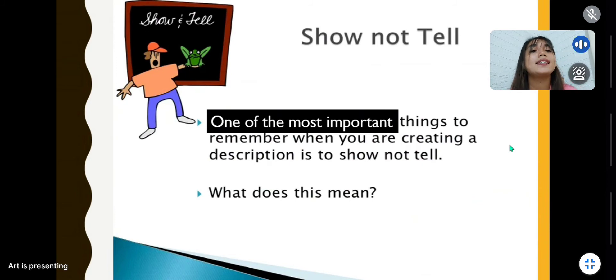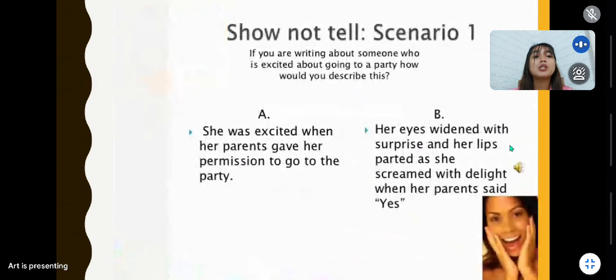So show not tell, scenario number one. If you are writing about someone who is excited about going to a party, how would you describe this? A: She was excited when her parents gave her permission to go to the party. Or B: Her eyes widened with surprise and her lips parted as she screamed with delight when her parents said yes. Letter B, correct. Why? Because the description in letter B is describing the person's facial expression, the eyes that were widened with surprise and her lips parted as she screamed with delight.